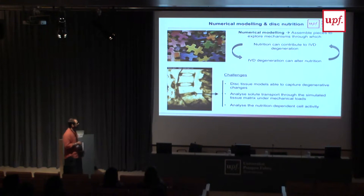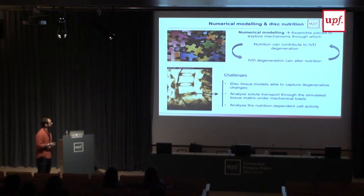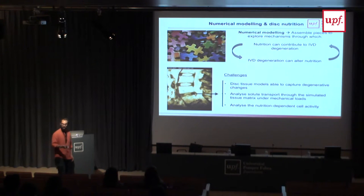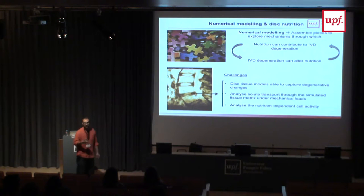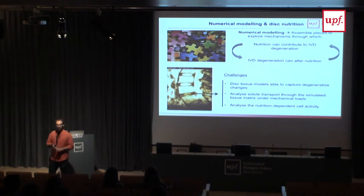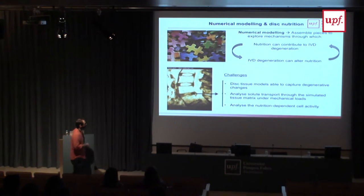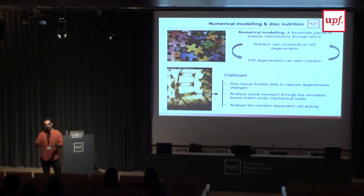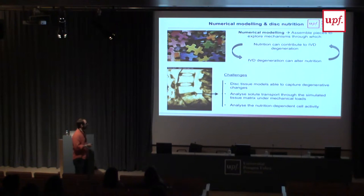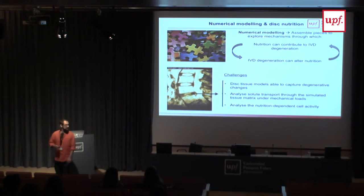The specific question we have been tackling is whether nutrition can contribute to disc degeneration, and whether disc degeneration can alter nutrition — and the mechanisms behind this feedback loop. In terms of modeling, we face three major challenges: a tissue model that can capture degenerative changes (changes in proteoglycan and water content, plus damage such as cracks in the matrix), coupling disc composition and biomechanical aspects to solute transport analysis, and relating everything to cell biophysics and activity.